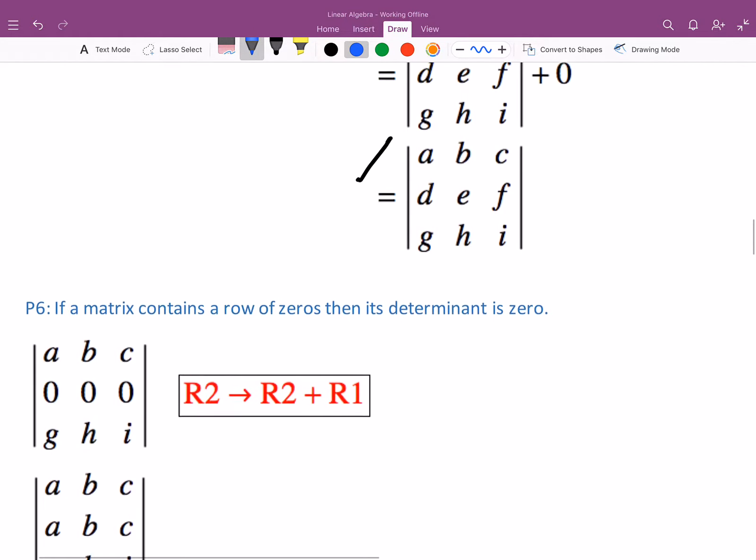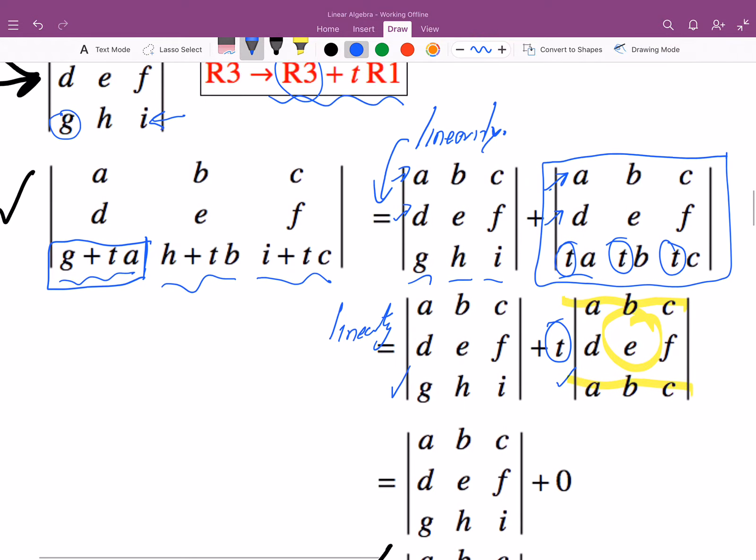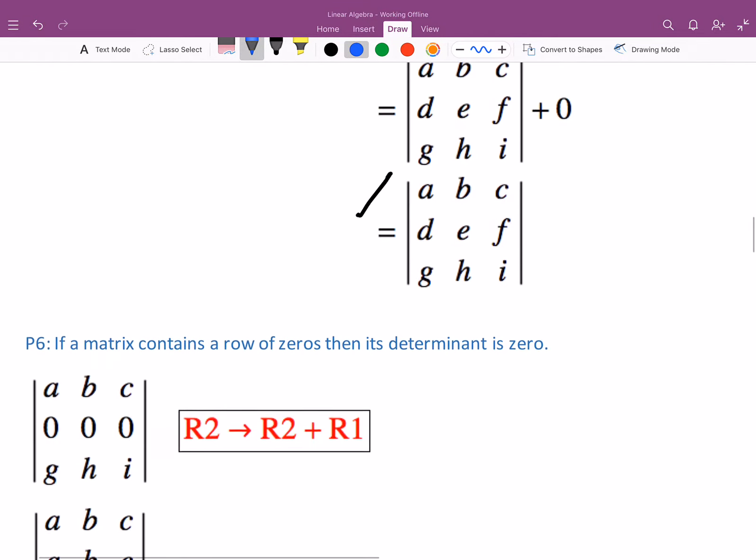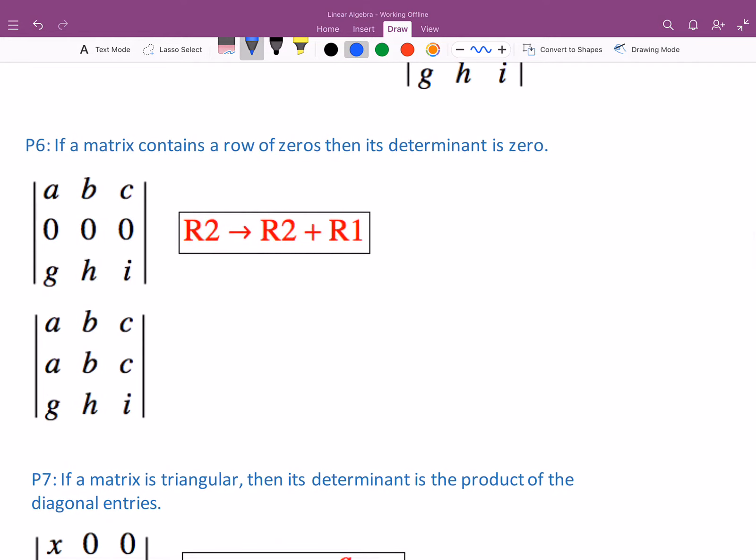The last property we looked at was that if we do this row operation of adding a multiple of one row to another row, it doesn't change the determinant. That directly ties to this next new property, which is if a matrix contains a row of zeros, then the determinant is zero.